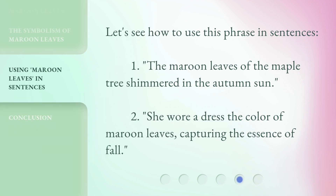Let's see how to use this phrase in sentences. One: the maroon leaves of the maple tree shimmered in the autumn sun. Two: she wore a dress the color of maroon leaves, capturing the essence of fall.